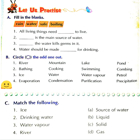Third is: dash the water kills germs in it. What kills the germs in water? By boiling the water we can kill germs in it. So the answer is boiling. Fourth is: water should be made dash for drinking. Water should be made safe for drinking.